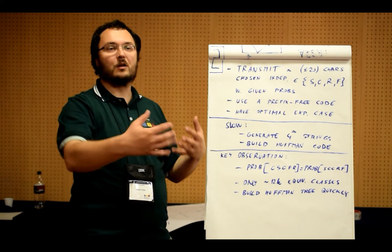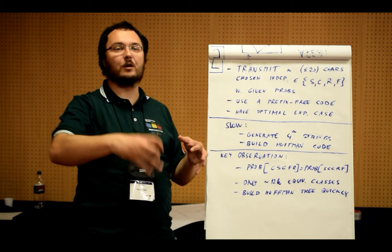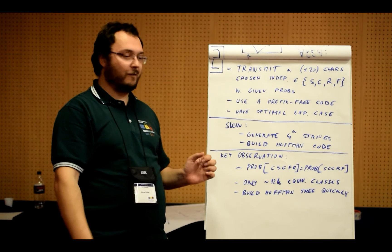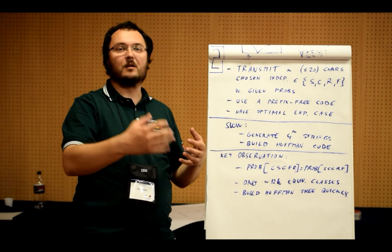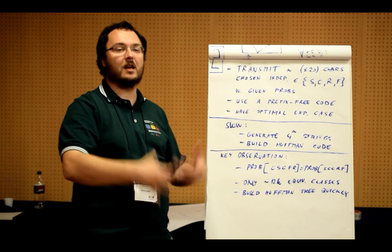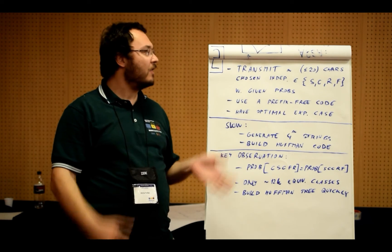And then we can do the same construction of the Huffman code, we just do it faster simply by taking all of the events with the same probability and processing all of them at once.